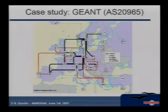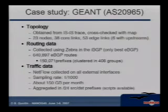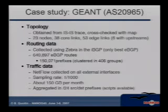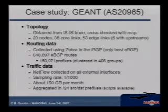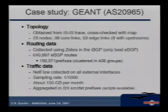Let's go to the case study. Géant is a network with POPs in all the European capitals — around 23 nodes, 38 core links, and 53 peering links, among which six are with upstream providers. We obtained the Géant topology based on an ISI trace. We obtained BGP routing data from a Zebra collector connected with IBGP sessions to all the routers in Géant, collecting all the current best eBGP routes. In addition, we also obtained NetFlow data.